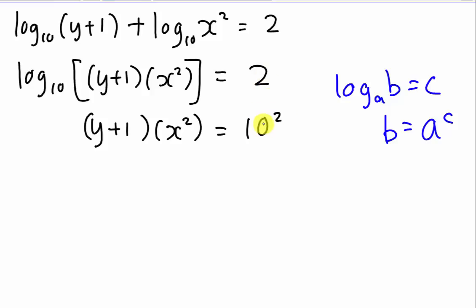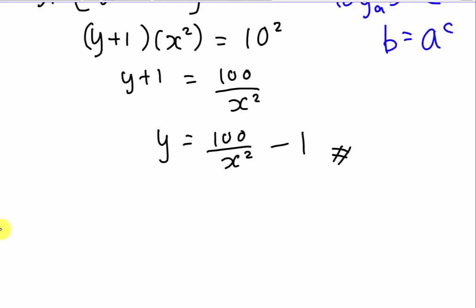Then I want y in terms of x. So of course I will move my x to the other side first. So I have (y+1) equals to 100 over x². So my y will equal to 100 over x² minus 1. I think this is the answer. Of course if you want to make them have the same denominator, you can do that. But I don't think you need that. If you want to rearrange this one into y equals to mx plus c, you can do that also.